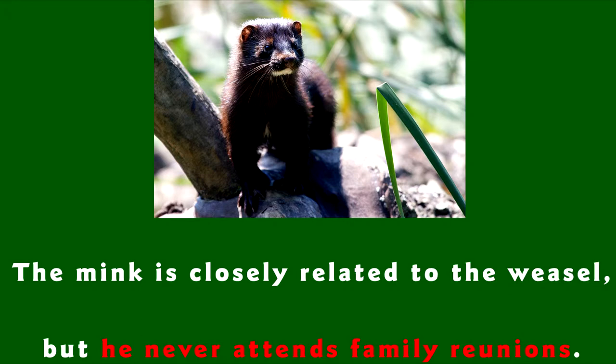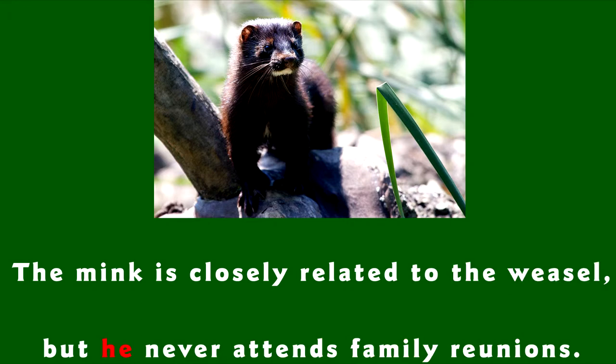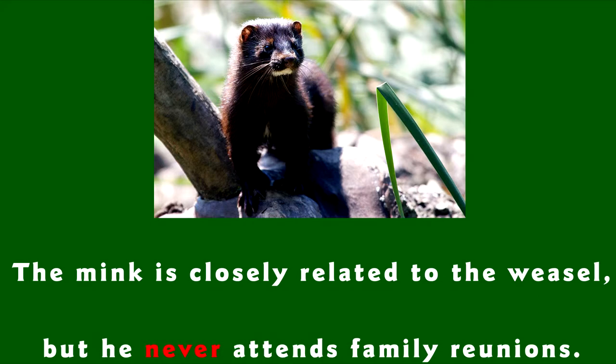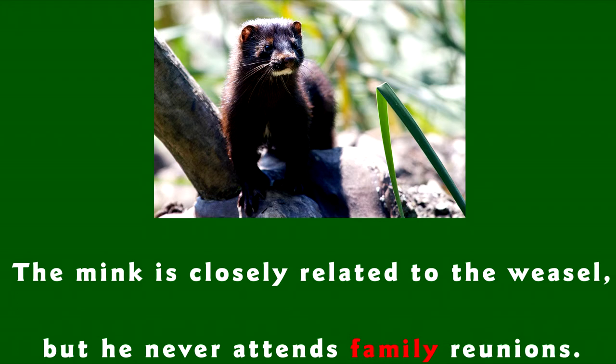The second clause is also independent. The simple subject is he, and the simple predicate is attends. The adverb never modifies attends. Reunions is the direct object of the sentence, and is modified by the noun family, which in this case acts as an adjective. Finally, we have the coordinating conjunction but to hold the two sentences together. It is a coordinating conjunction because both clauses are independent. Also note that we use a comma to separate the two independent clauses.